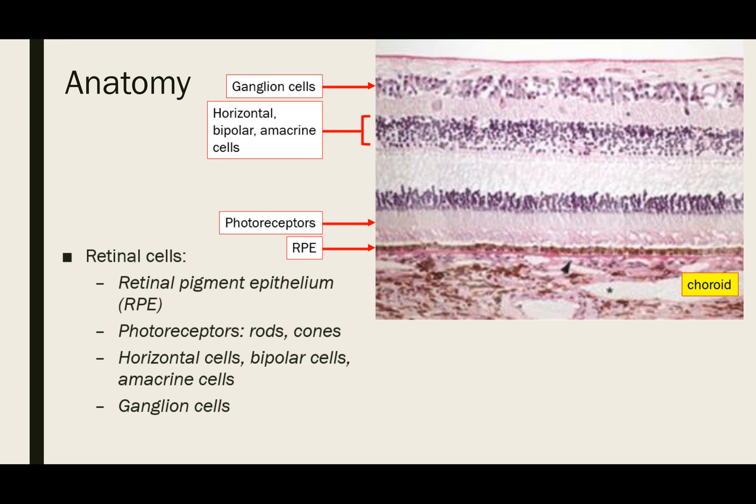Rods detect motion, provide black and white vision, and function well in low light. Cones provide central vision, color vision, and perform best in brighter settings. Next, there are horizontal cells, bipolar cells, and amacrine cells, and then the ganglion cells. The nerve fibers of the ganglion cells all come together at the optic nerve.